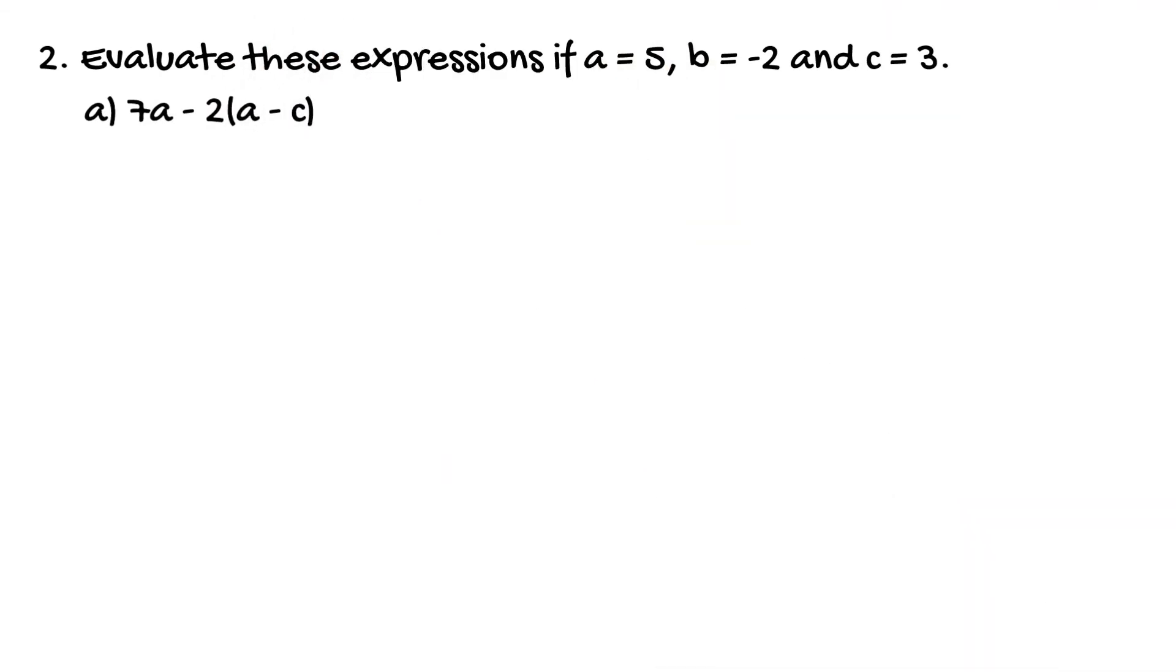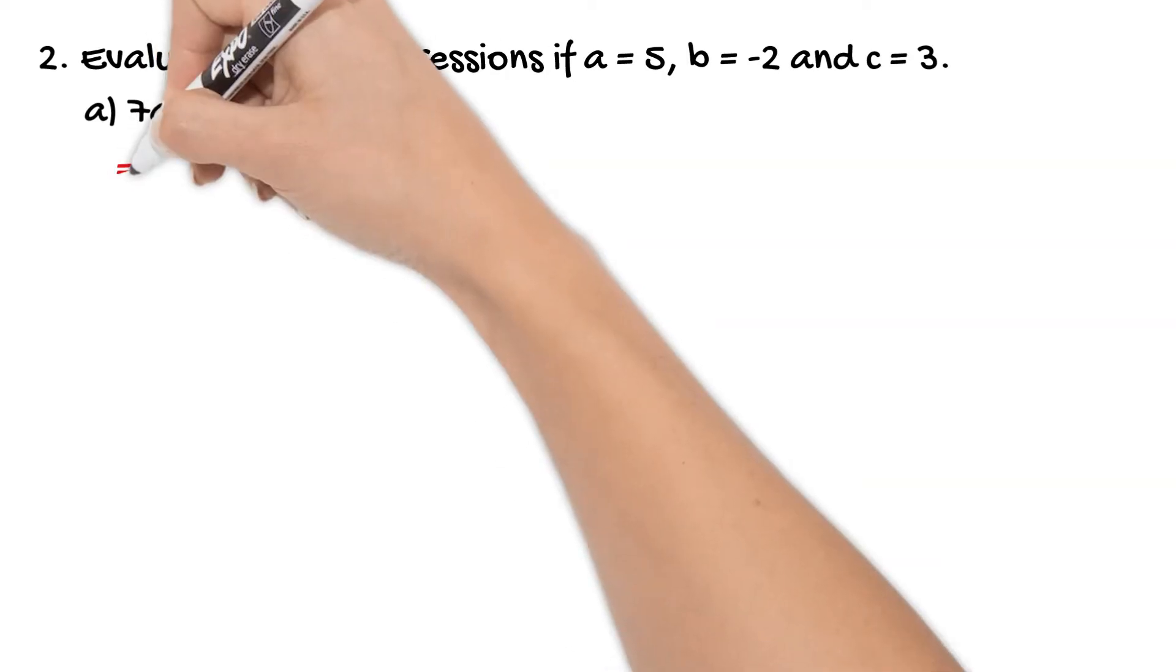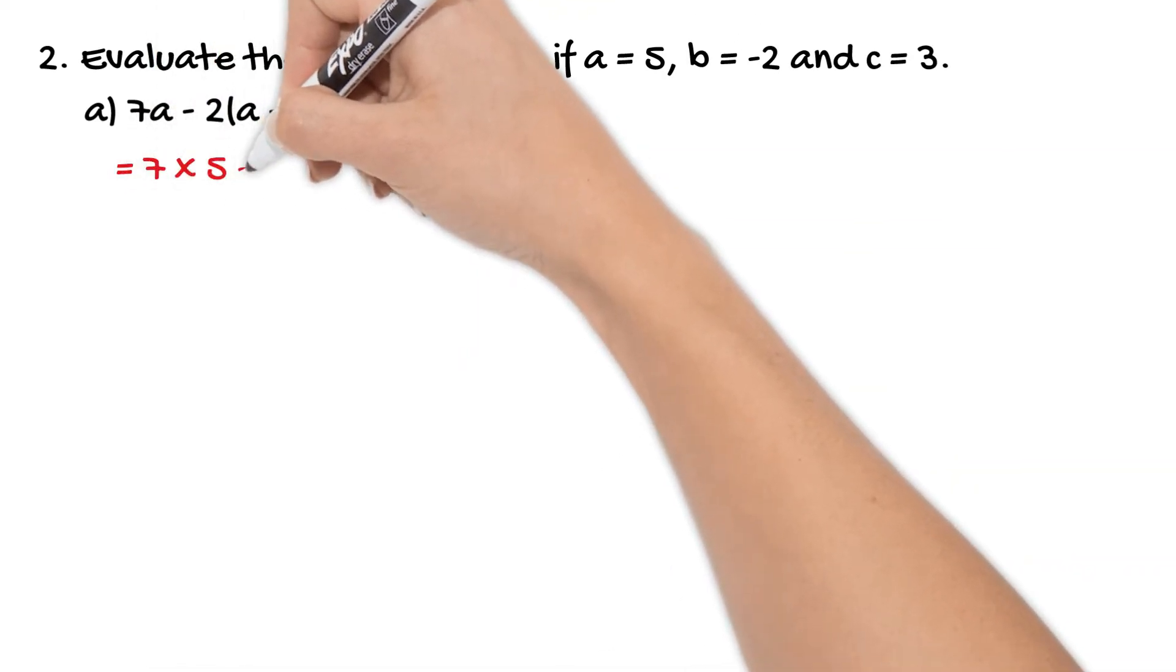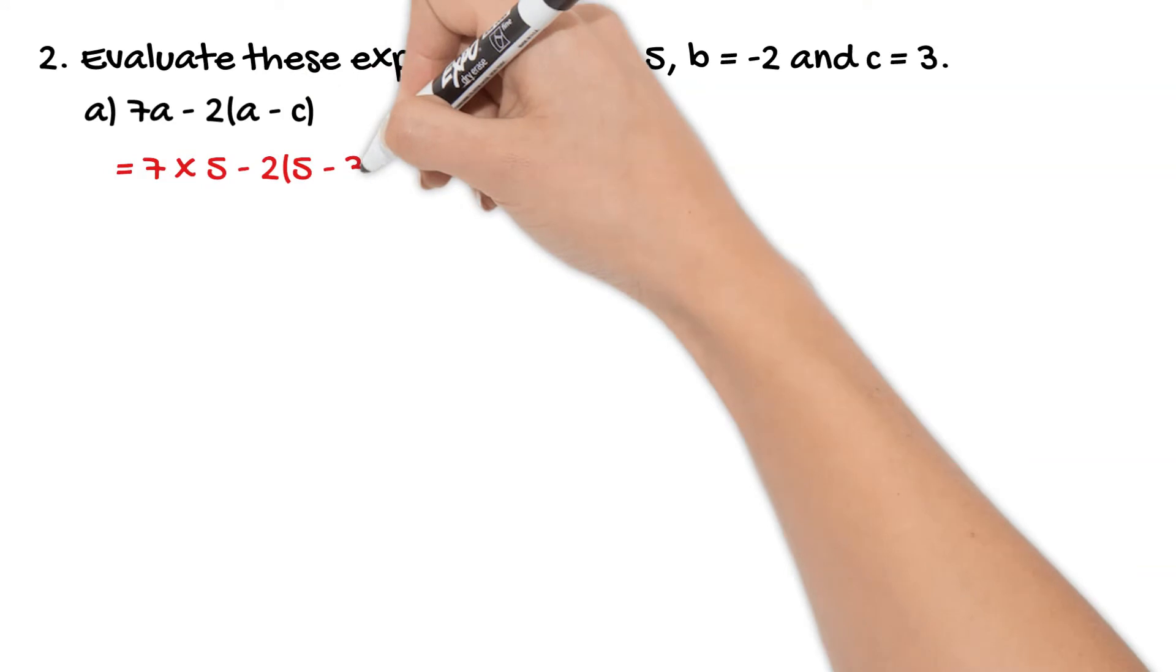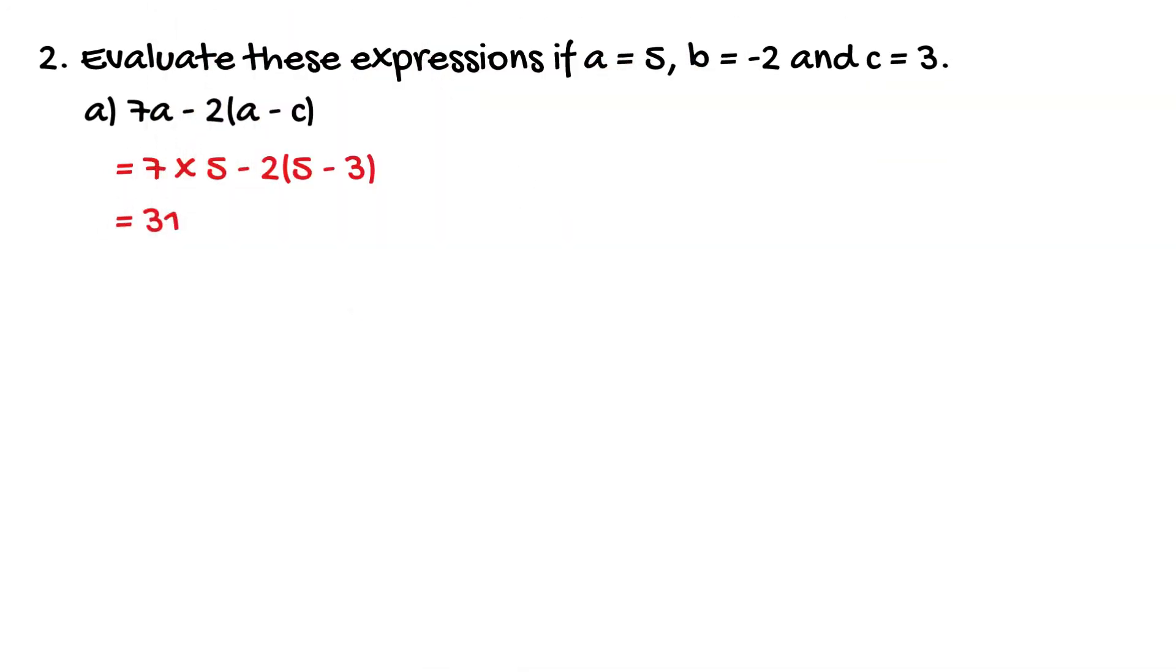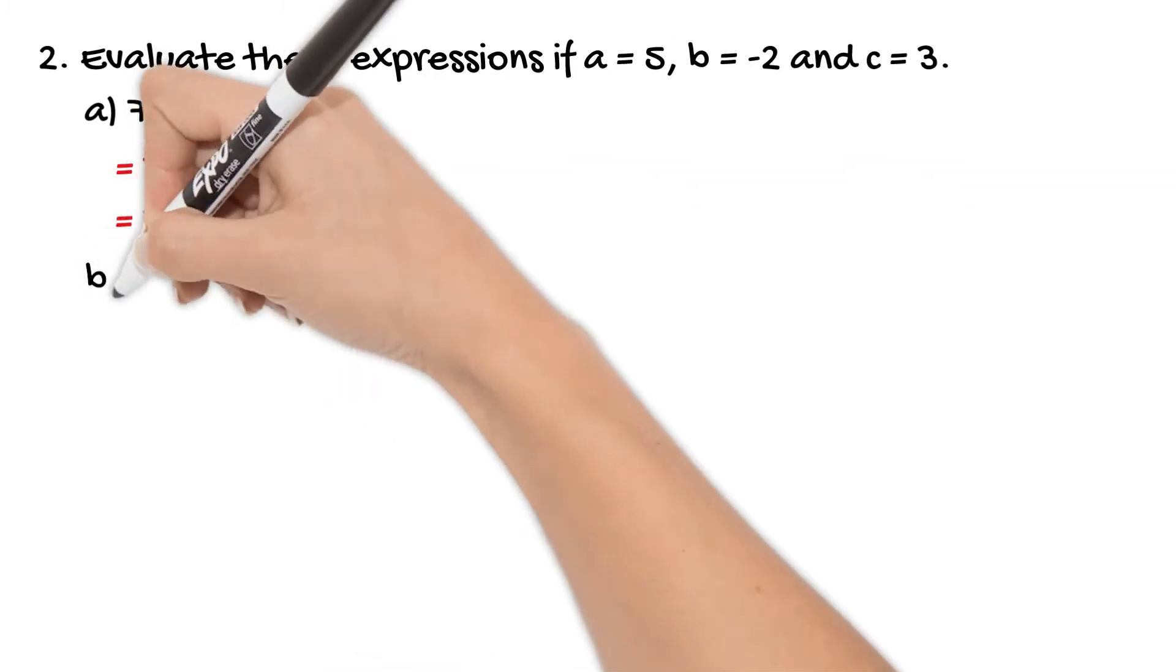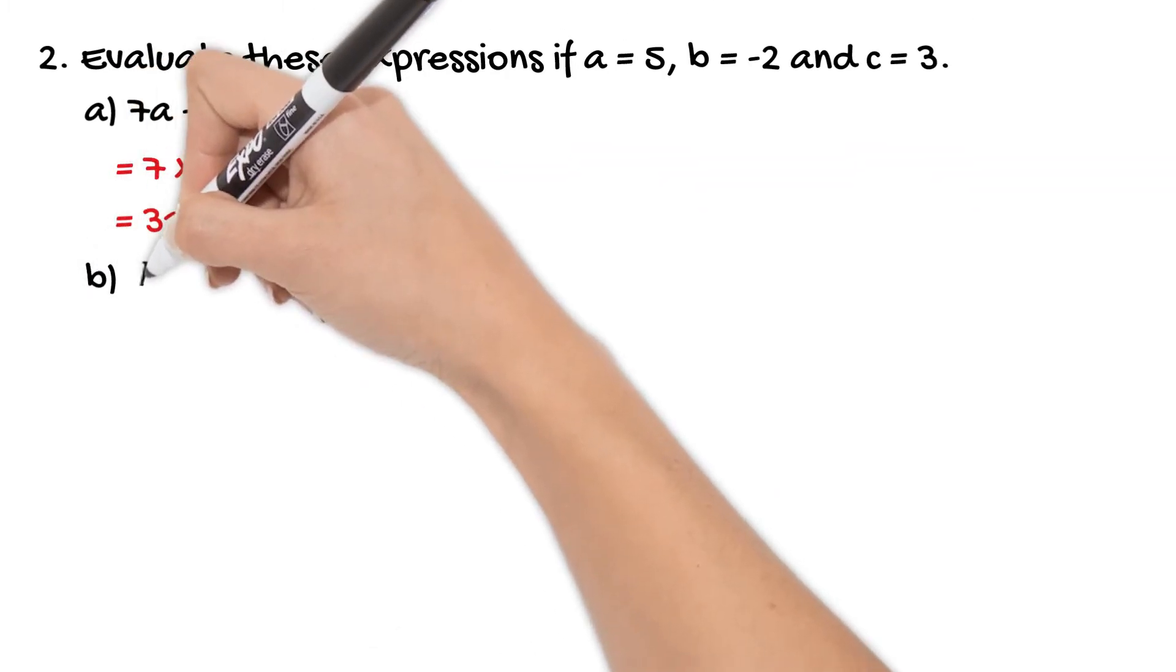So we have 7 times 5 instead of 7a minus 2 outside of 5 minus 3. So I've just substituted 5 and 3 there for a and c and then I just work that out as normal and it gives us a value of 31.